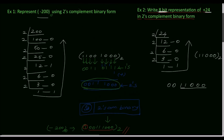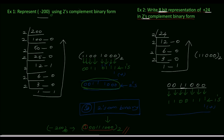Now find the 1's complement of the binary number: 0 becomes 1, 1 becomes 0, 1 becomes 0, 0 becomes 1, 0 becomes 1. This is the 1's complement. To find the 2's complement, add 1: 1 plus 1 sum is 0 carry 1, 1 plus 1 sum is 0 carry 1. The 2's complement result is 11101011.